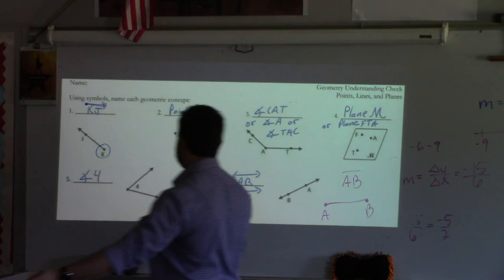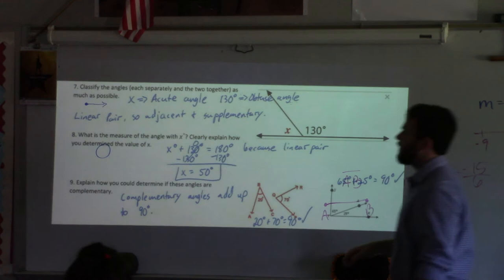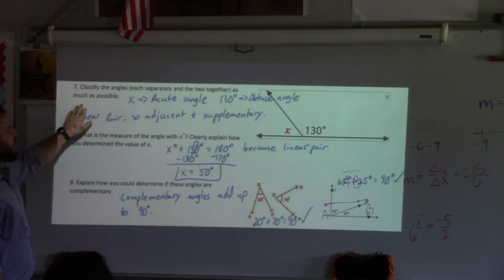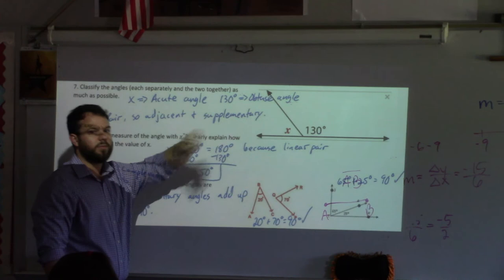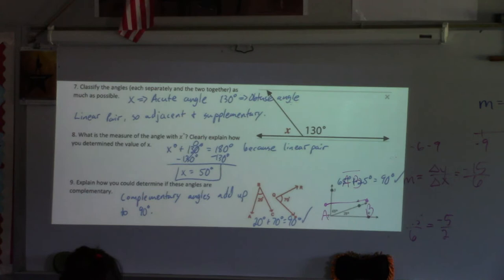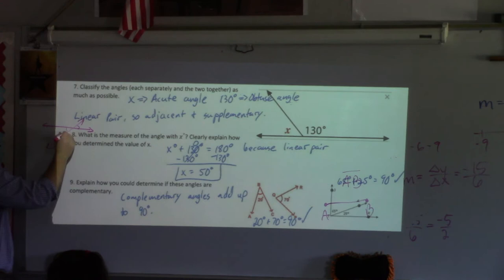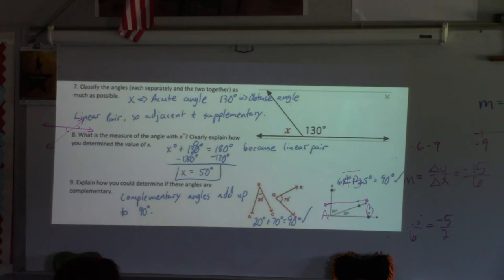Any other questions on numbers one through six? Ready to move forward? So here is everything I was looking for at number seven. Some of us got some of it, but we needed to notice all of it. Classify the angles each separately: x is an acute angle, 130 degrees is an obtuse angle. I was also looking for: they are a linear pair, they are adjacent and supplementary. That is the complete classification. I saw some people try to say they were vertical angles — we need to go back and study what vertical angles are. Vertical angles are only created when two lines intersect, and the vertical angles are the ones across from each other. Those are congruent, but that's not what we have here — we have a linear pair.